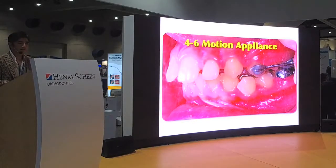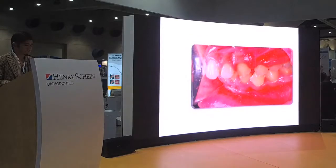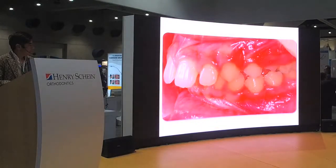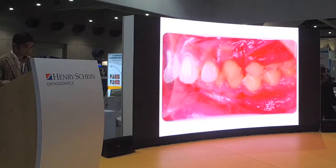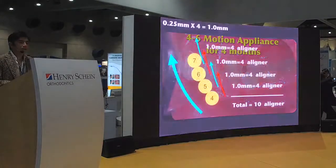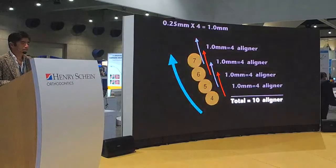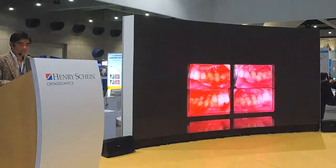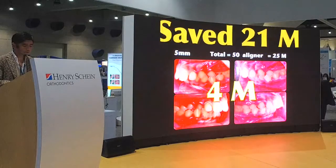So 4s and 6s are the appropriate selections for distalization. In this particular case, we placed motions on the first premolars and molars, and at the beginning of distalization we placed Class 2 elastics. We achieved solid Class 2 to Class 1 correction in 4 months. With sequential staging, each aligner requires 4 aligners per millimeter, so one millimeter of distalization requires 10 aligners. For a 5-millimeter Class 2, you would need about 50 aligners — every 2 weeks, that's 25 months. We finished in 4 months of distalization, saving almost 21 months.